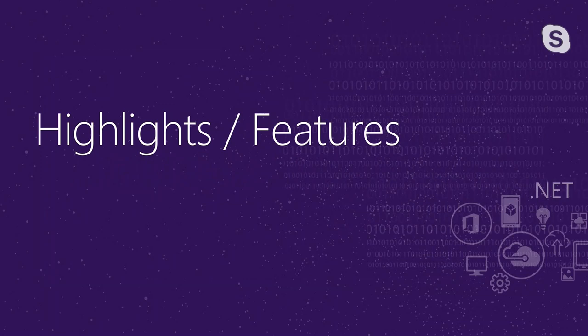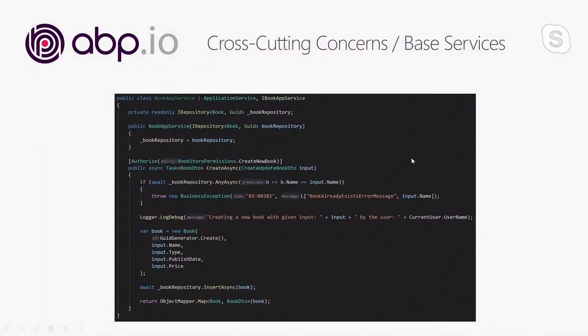Now I want to highlight some features of the ABP framework. The main goal is to make you focus on your own business code by handling repeating tasks by convention. It handles cross-cutting concerns and provides the services you need. Let's look at a typical application service class. ABP provides base classes for DDD elements. In this example, the class inherits from ApplicationService — a base class that provides properties and methods commonly used in the application layer. ABP automatically registers this class in the dependency injection container as a transient service.